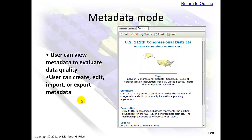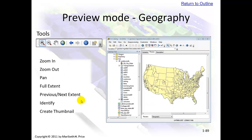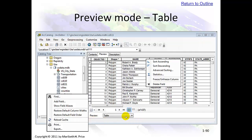Preview mode is where you can look at the geography, or down here hit the dropdown arrow and choose Table, and you'll be able to see the table of data. You can zoom in, go to the extent, and pan around. You did this in the first lab.